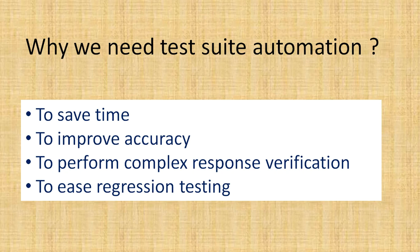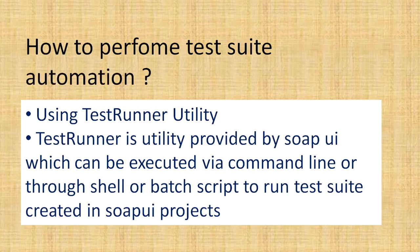SOAP UI automation essentially tries to automate these manual steps. The benefits of test suite automation are that we can save our time — if you have hundreds or two hundred test cases, running each one individually will take a lot of time. Secondly, when verifying responses manually there are always chances of human error, so test suite automation improves accuracy. It also helps with regression testing, because you can just run the test suite and verify whether all existing functionality is working as expected.